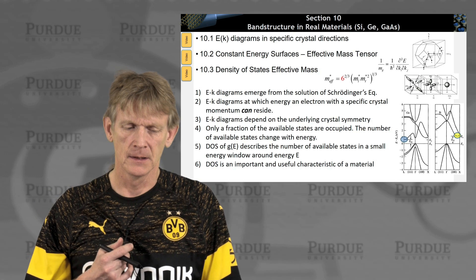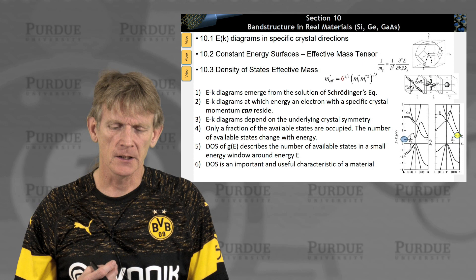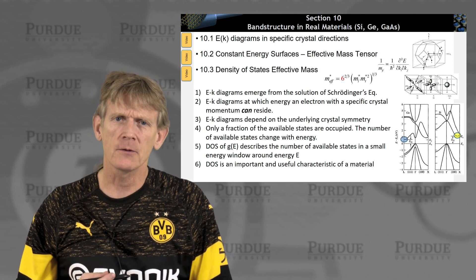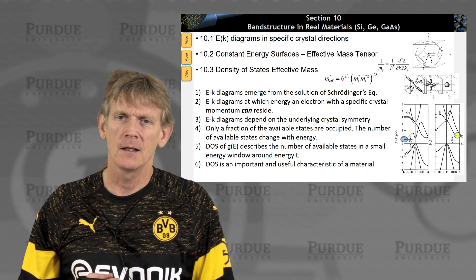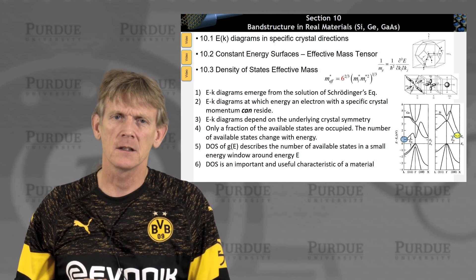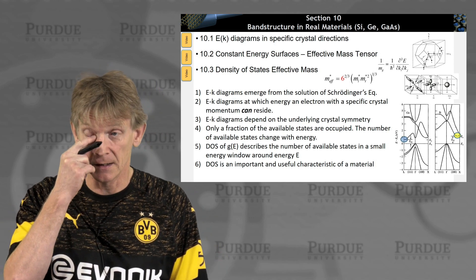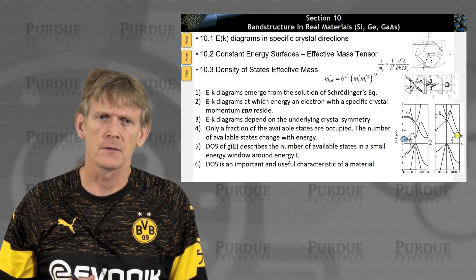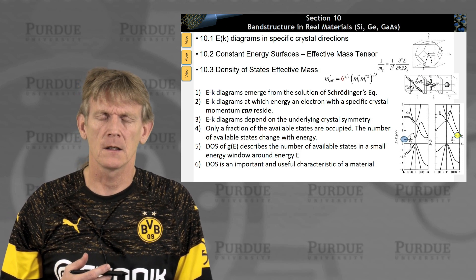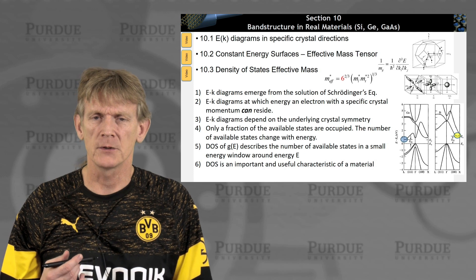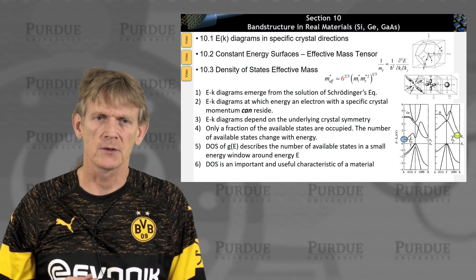So that really concludes section 10, where we looked at properties of real materials. So the EK diagrams are solutions to Schrodinger equation. They are calculated in a reciprocal space. And a reciprocal space represents very nicely symmetries of the crystal. So you will look into certain crystal directions to find interesting properties that vary in particular crystal directions.